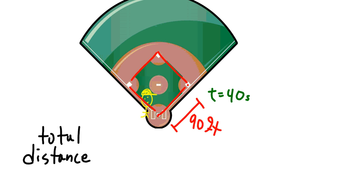with the player running around the bases, the distance is the total amount the player moves going from home plate to first, second, third, and back home.